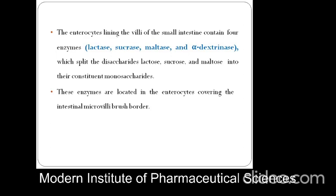The enterocyte lining of villi is contained in the wall of the small intestine. It contains 4 enzymes: lactase, which is converted to lactose; sucrase, which is converted to sucrose; maltase, converted to maltose; and alpha-dextrinase, which splits disaccharides such as lactose, sucrose, and maltose into their constituent monosaccharides. These enzymes are located in the enterocytes covering the intestinal microvillus brush borders.